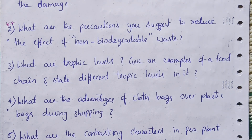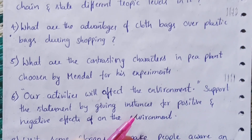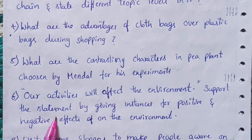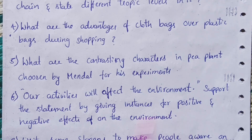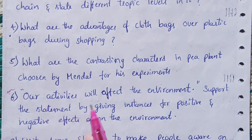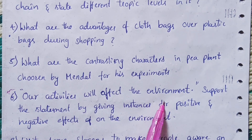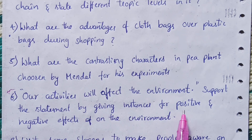The fifth question is: What are the contrasting characters in the pea plant chosen by Mendel for his experiments? The sixth question is: Our activities will affect the environment — support this statement by giving examples of both positive and negative effects on the environment.